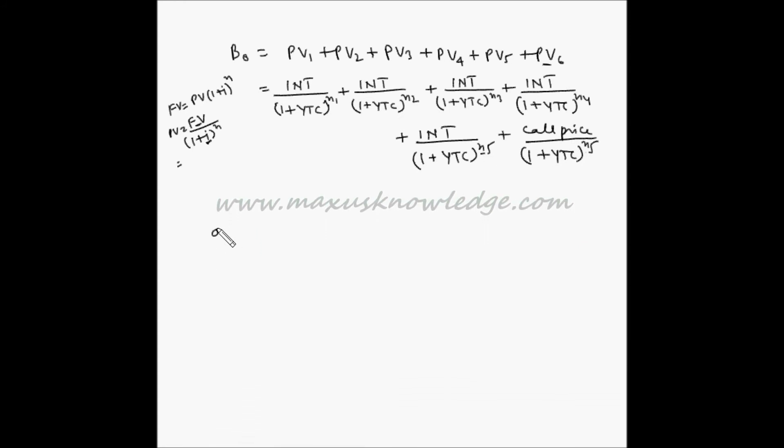So basically rb0 can be written as sigma INT divided by 1 plus ytc to the power t where t is equal to 1 to n, plus call price divided by 1 plus ytc to the power n.